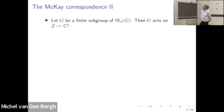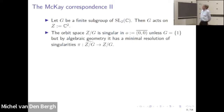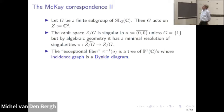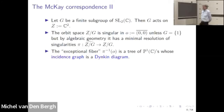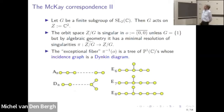We're talking about finite subgroups of the special linear group. Such a group acts tautologically on the complex plane, and then we can construct the orbit space. As in our example, it is singular except at one point, the origin. Algebraic geometry allows us to resolve that singularity. In the earlier example, the singular point became a projective line. Here in general, something a bit more complicated happens: we get a tree of projective lines. The incidence graph of these projective lines has a very particular form — it's a member of the famous list of graphs called Dynkin diagrams.